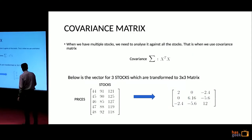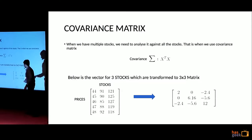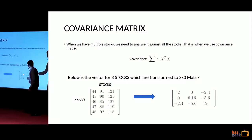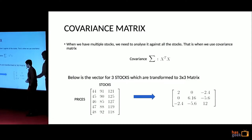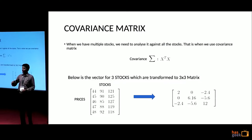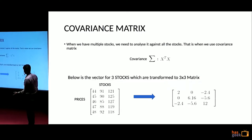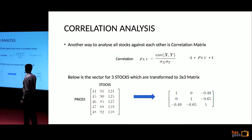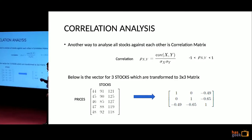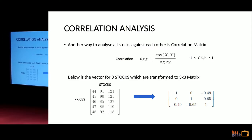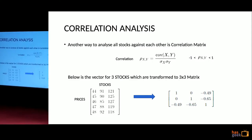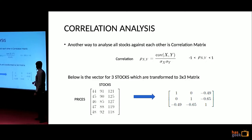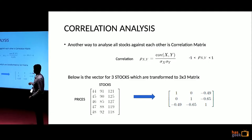One problem with covariance is that if stock 3's relationship with stock 1 is -2.4 and with stock 2 is -5.6, can we say it has a 2x relationship? No — we don't know the upper and lower limits. That is why covariance matrix is not a good idea. That led to correlation analysis, where we scale the covariance with the standard deviations themselves. Now all values scale from -1 to 1. So -0.49 and -0.65 give us immediately interpretable relationships — 50% and 65% unrelated, respectively.